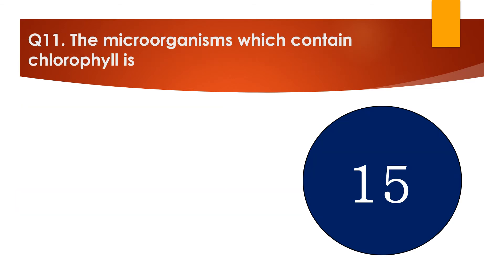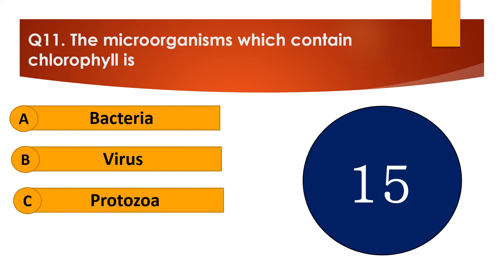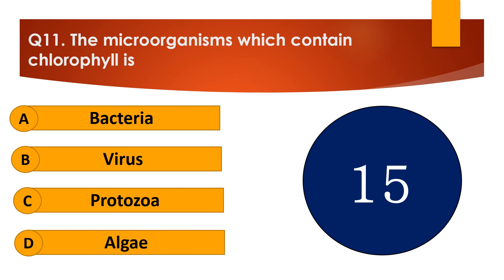Question number 11. The microorganism which contains chlorophyll is dash. The options are: A. Bacteria, B. Virus, C. Protozoa, or D. Algae.